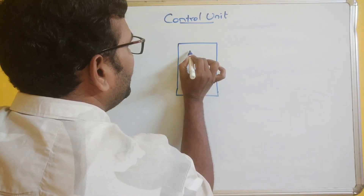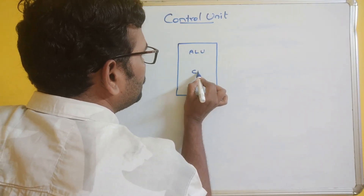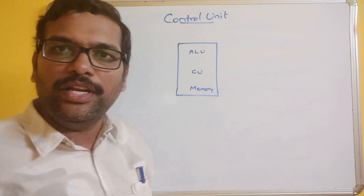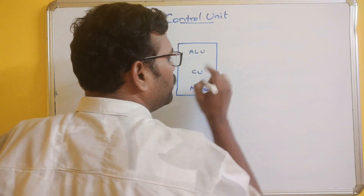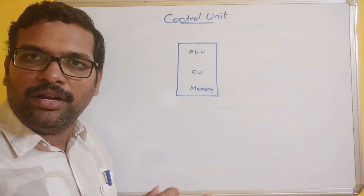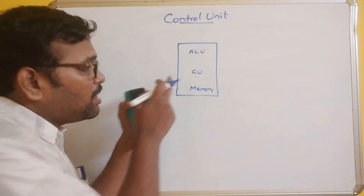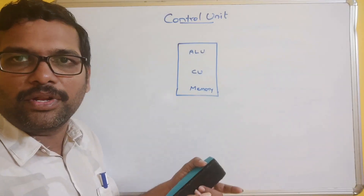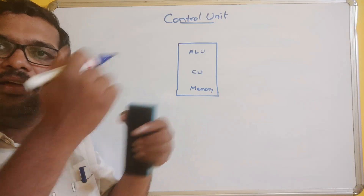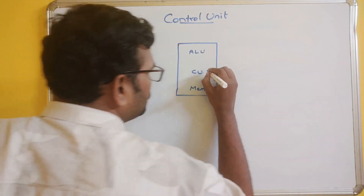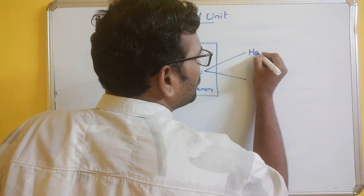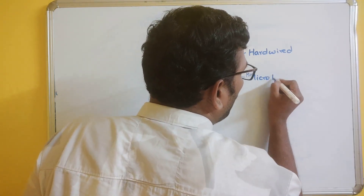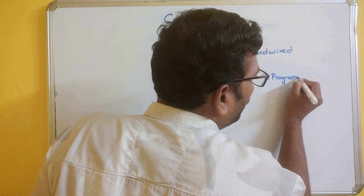The CPU has three partitions: one is the ALU (arithmetic logical unit), the control unit, and memory. This control unit controls all parts of the computer and sends data or instructions to all the components. It decides and operates the operations done by the processor. The control unit is divided into two categories: one is the hardwired control unit, and another is the microprogrammed control unit.